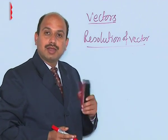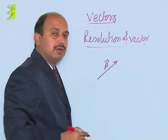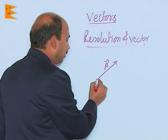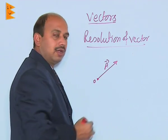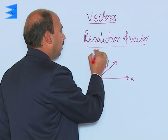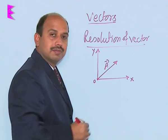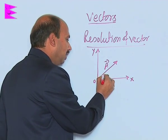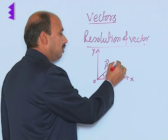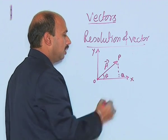Suppose you have got vector A like this and you want to split this vector into two components, that means two vectors. This is a starting point and this is an ending point. We take the x-axis over here and we take the y-axis. The vector A is in the xy plane. Suppose vector A is making an angle theta here. Draw a perpendicular from here — this you can take as OP and this you can take as Q.